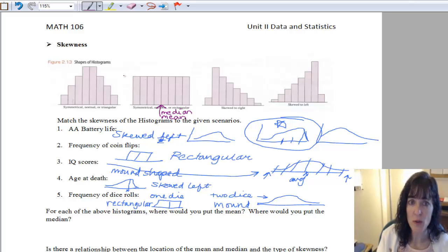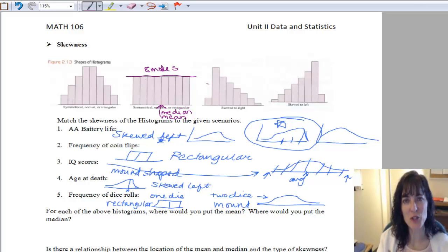Now on this one for the mode, you see that they all are the exact same height, so we have eight modes. Rather unusual, but on a rectangular distribution, if they are all exactly the same height, you have that many modes.